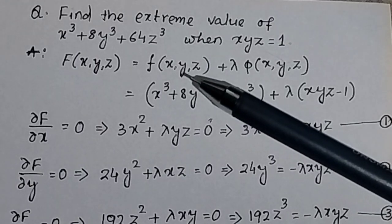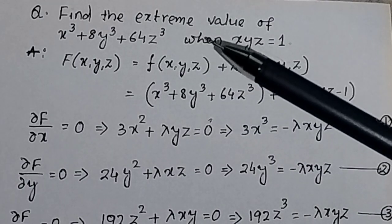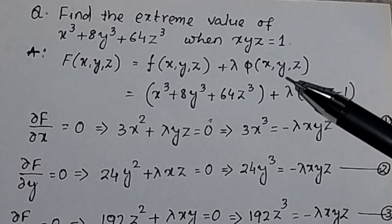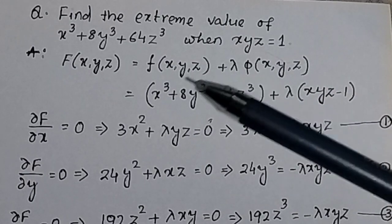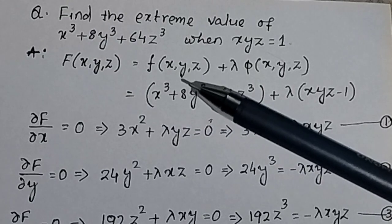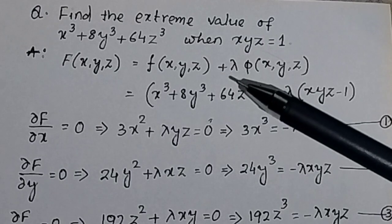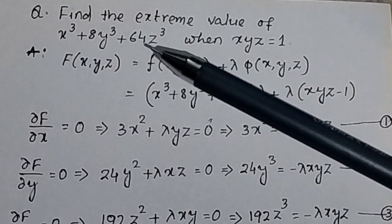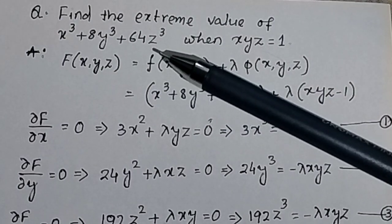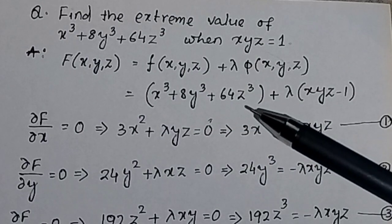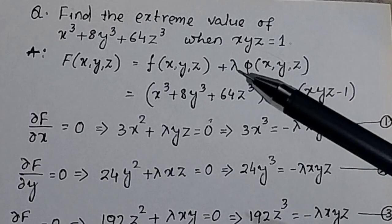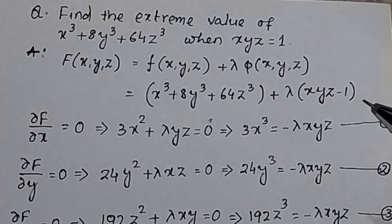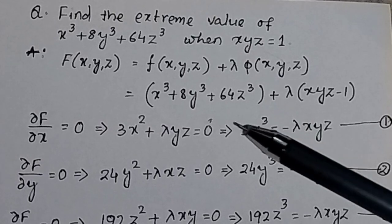From the Lagrange equation, the Lagrange function F(x,y,z) equals the objective function plus lambda times the constraint condition. Here lambda is called the Lagrange multiplier. So the Lagrange function is x³ + 8y³ + 64z³ + λ multiplied by the constraint function xyz.